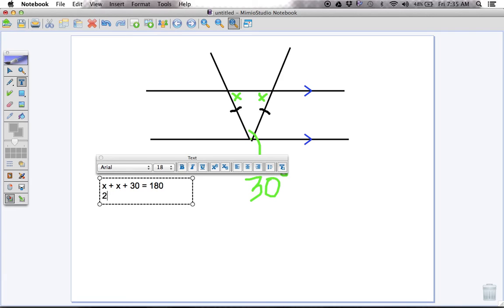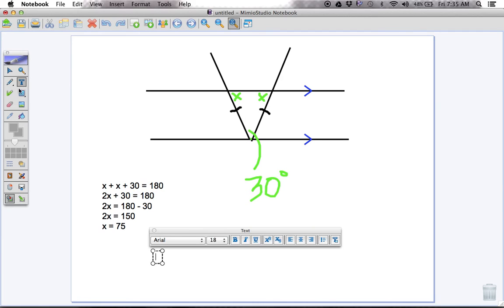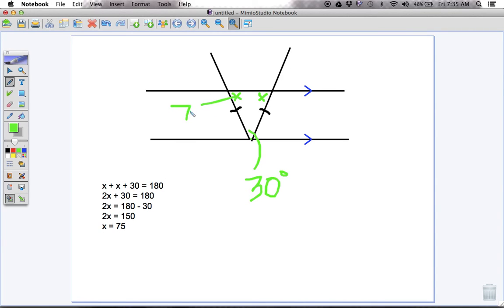If we simplify that, we have two x's plus 30 is equal to 180. And using very simple algebra, we have 2x is equal to 180 minus 30. 2x is equal to 150. Therefore, when we divide both sides by two, we have x is equal to 75. So that means that this angle right here is equal to 75, and this angle is equal to 75.